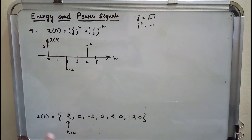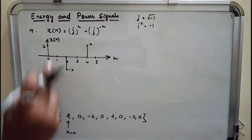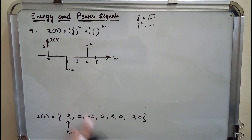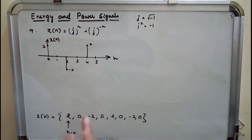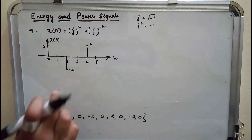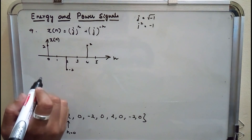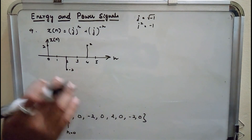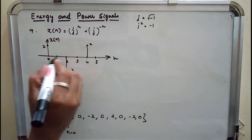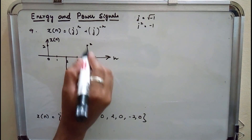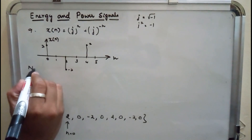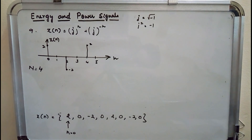Looking at the waveform: at n=0, amplitude is 2; at n=1, amplitude is 0; at n=2, amplitude is -2; at n=3, amplitude is 0; at n=4, amplitude is 2 again. Counting from one sample back to the same sample: 1, 2, 3, 4 — the fundamental period N equals 4.